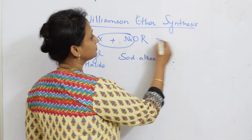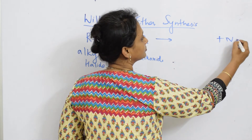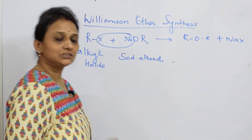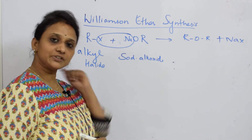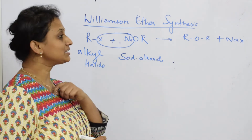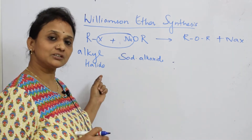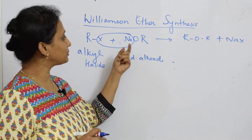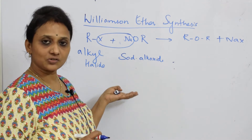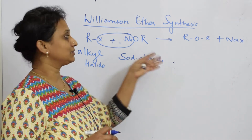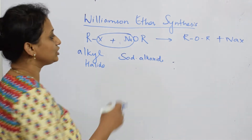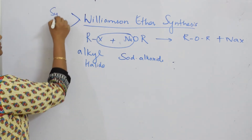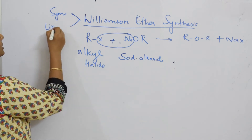There is an elimination of NaX, and the leftover product you get is an ether. So Williamson Ether Synthesis is the reaction between an alkyl halide and a sodium alkoxide to form ethers.